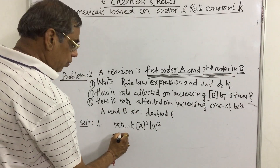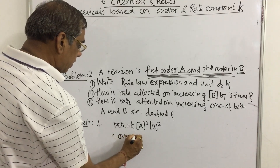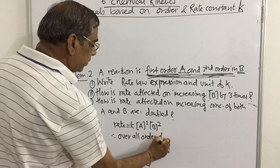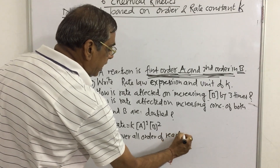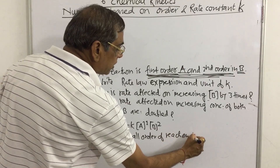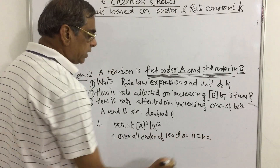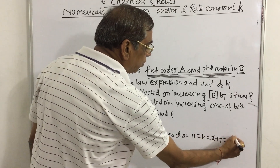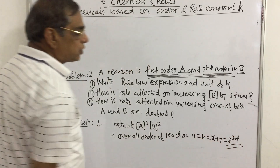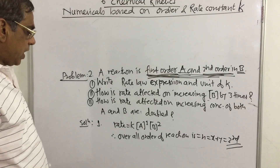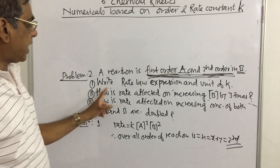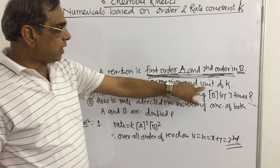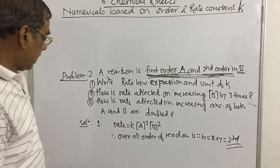So the total overall order of the reaction is 1 plus 2, which equals 3. Now, how do we find the unit of rate constant k?